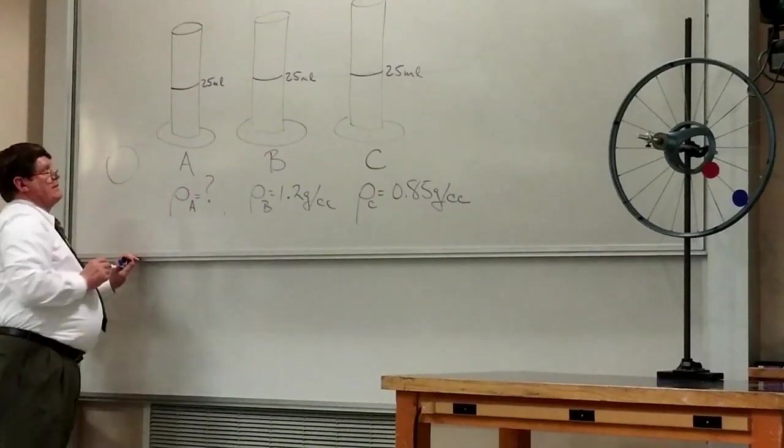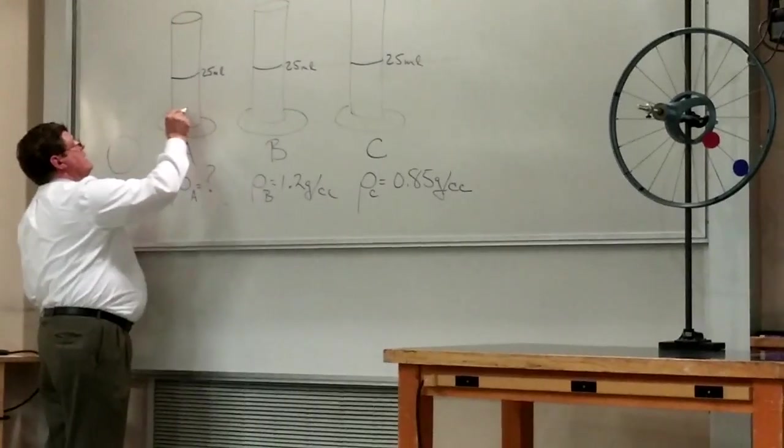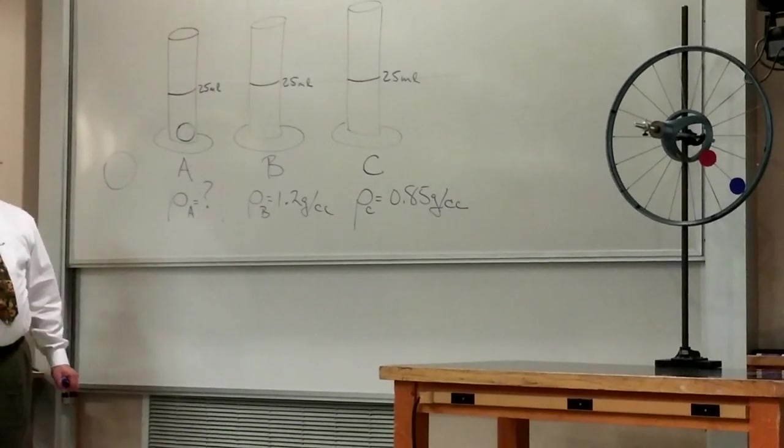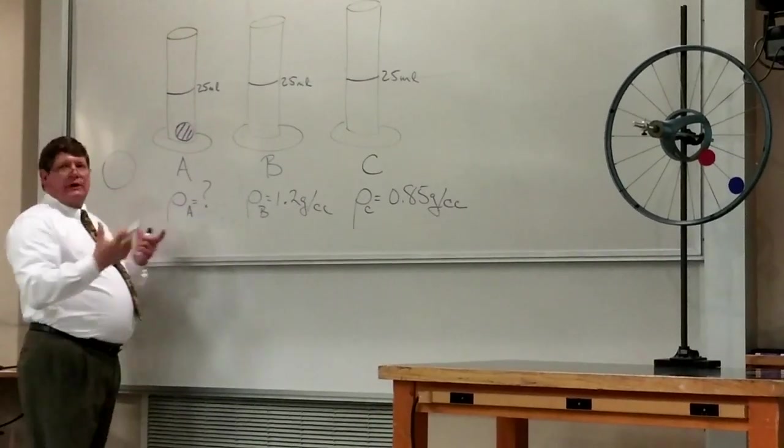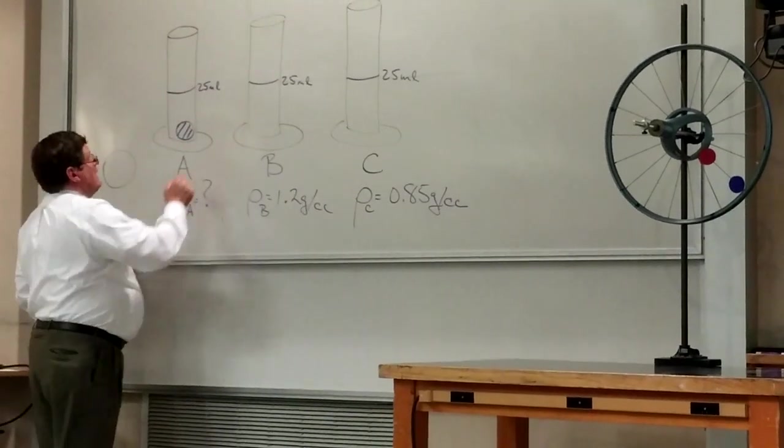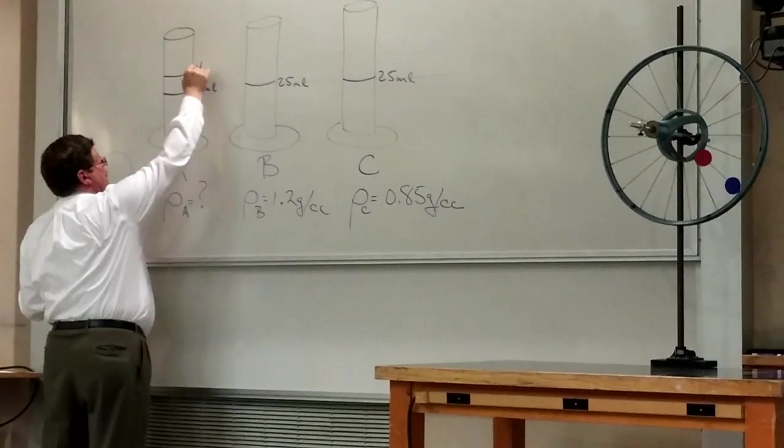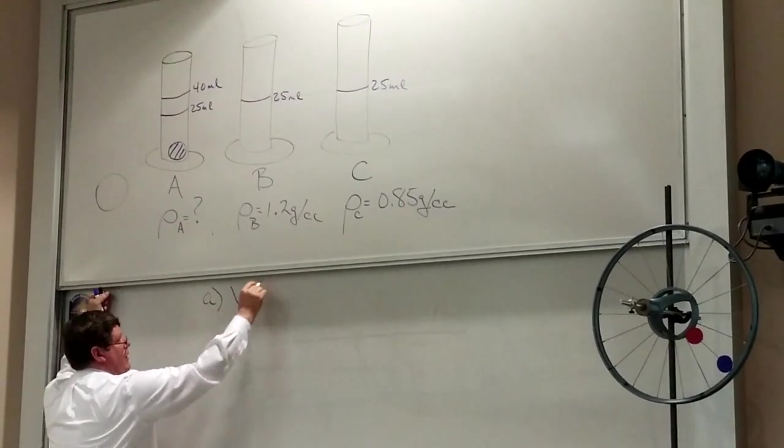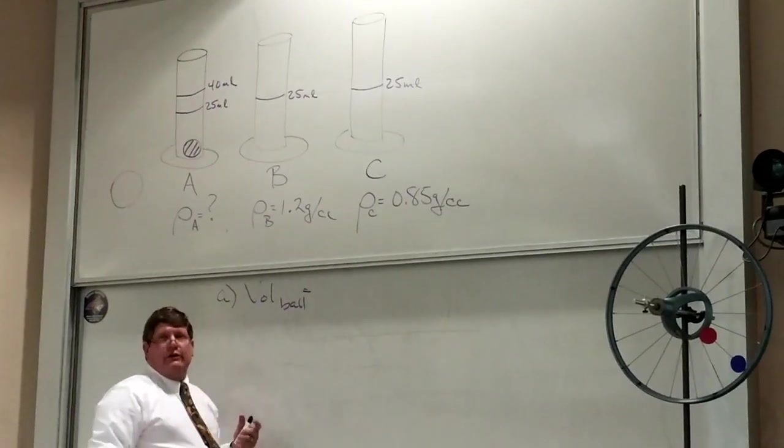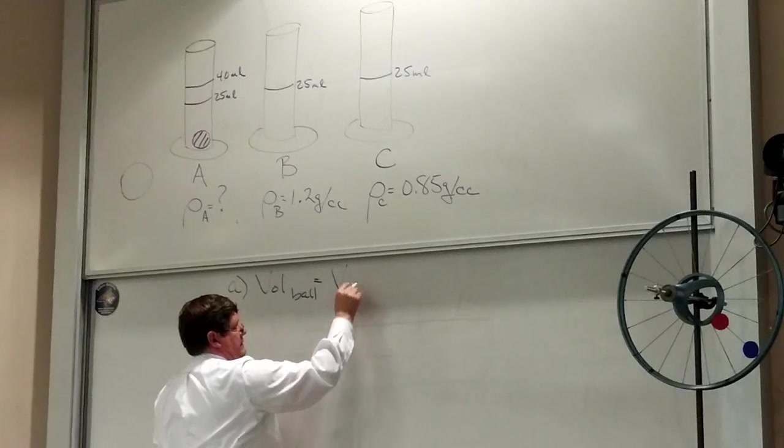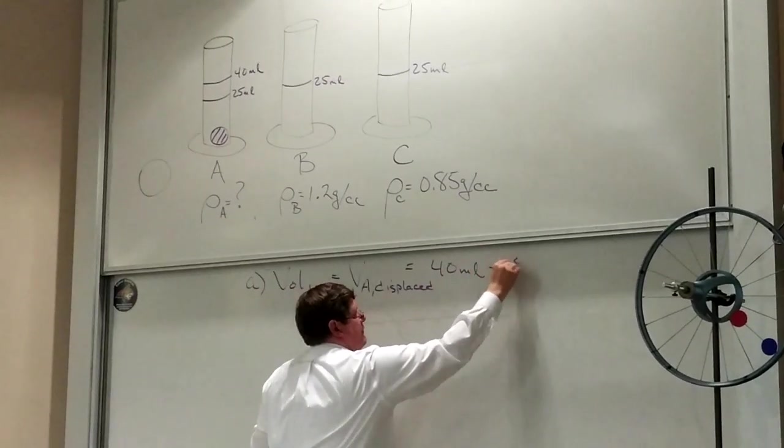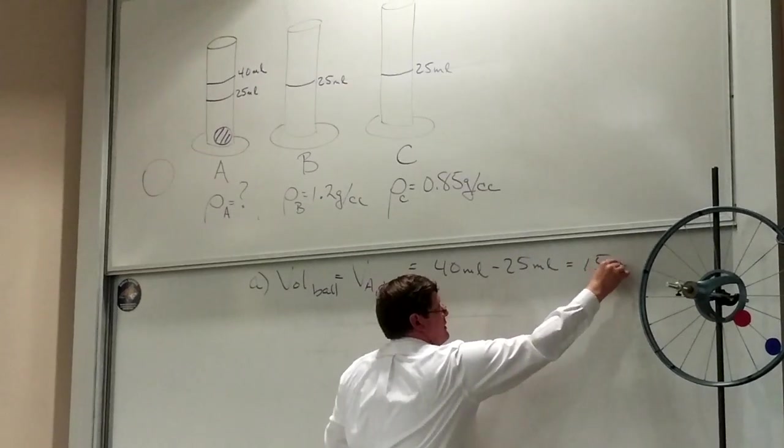Now we're told certain things about a ball and one of the things we're told is that when it's put in A it sinks. Because it sinks it displaces an amount of liquid equal to its own volume. Where that ball is now liquid A used to be. It got pushed out of the way. And we're told that the level in the beaker goes up to 40 milliliters. And that gives me my answer to part A. The volume of the ball is equal to the volume of liquid A displaced, which is 40 milliliters minus 25 milliliters or 15 milliliters.